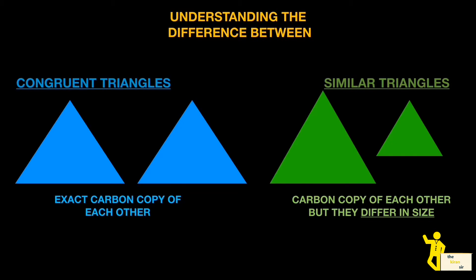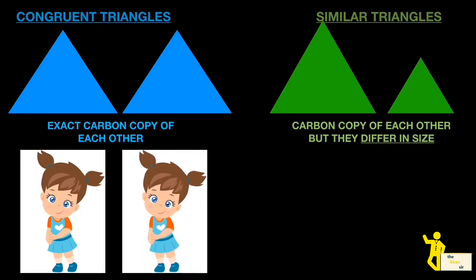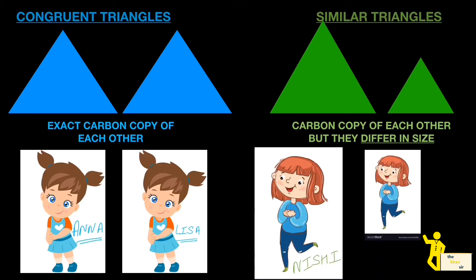Let's look at one more example using two girls. If you look at Mona and Lisa, they are both exactly the same — that would be like congruent. But if you look at Nishi and Neha, Nishi is quite taller than Neha. So even though they look similar, their size is different — when the size is different, they are called similar triangles, and when they are exact carbon copies, they are called congruent triangles.